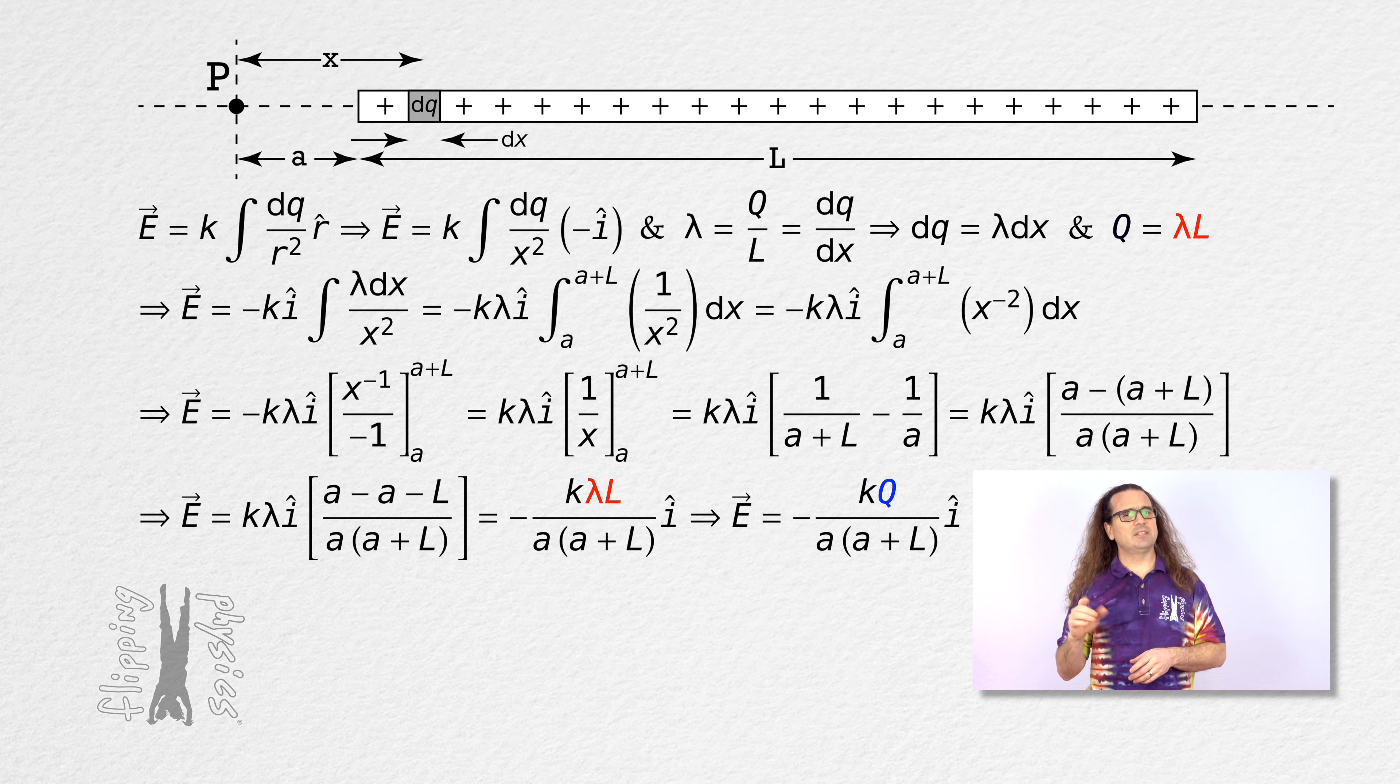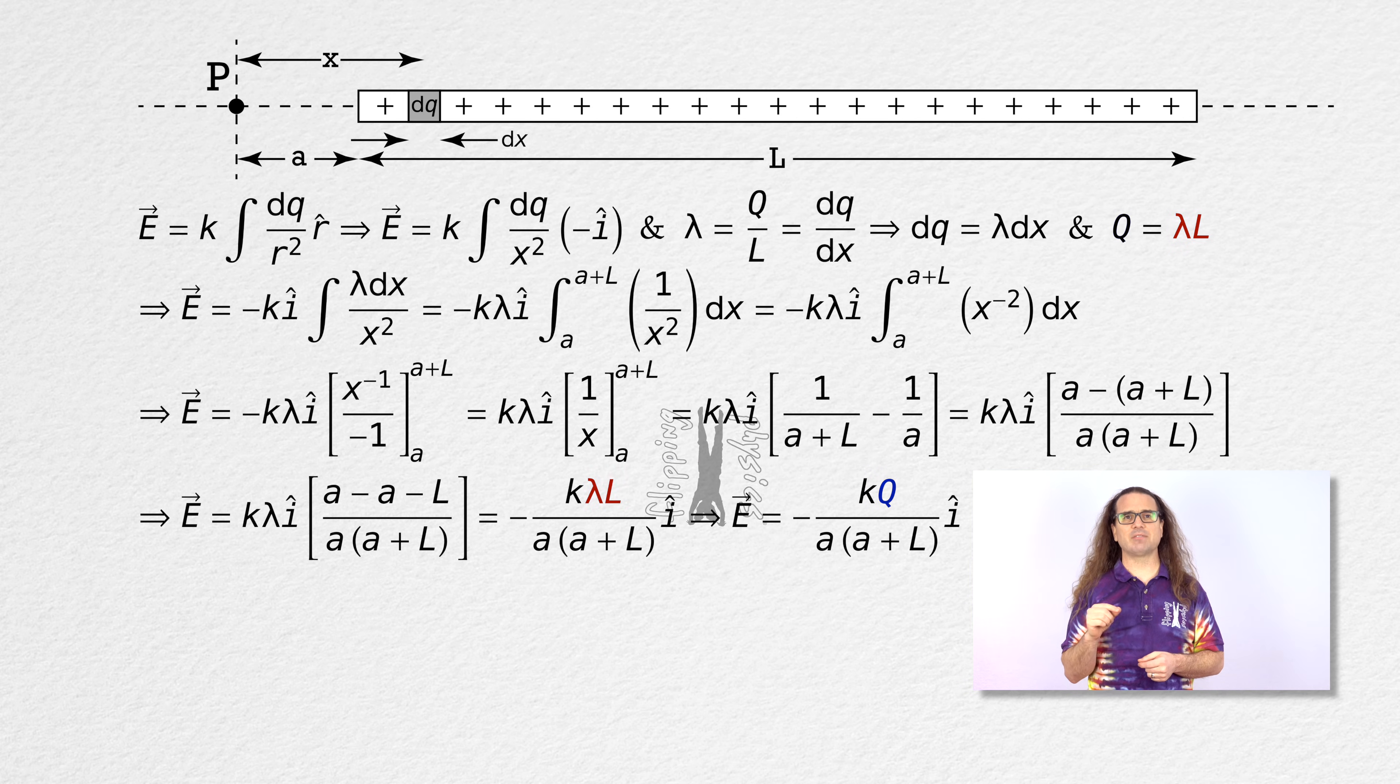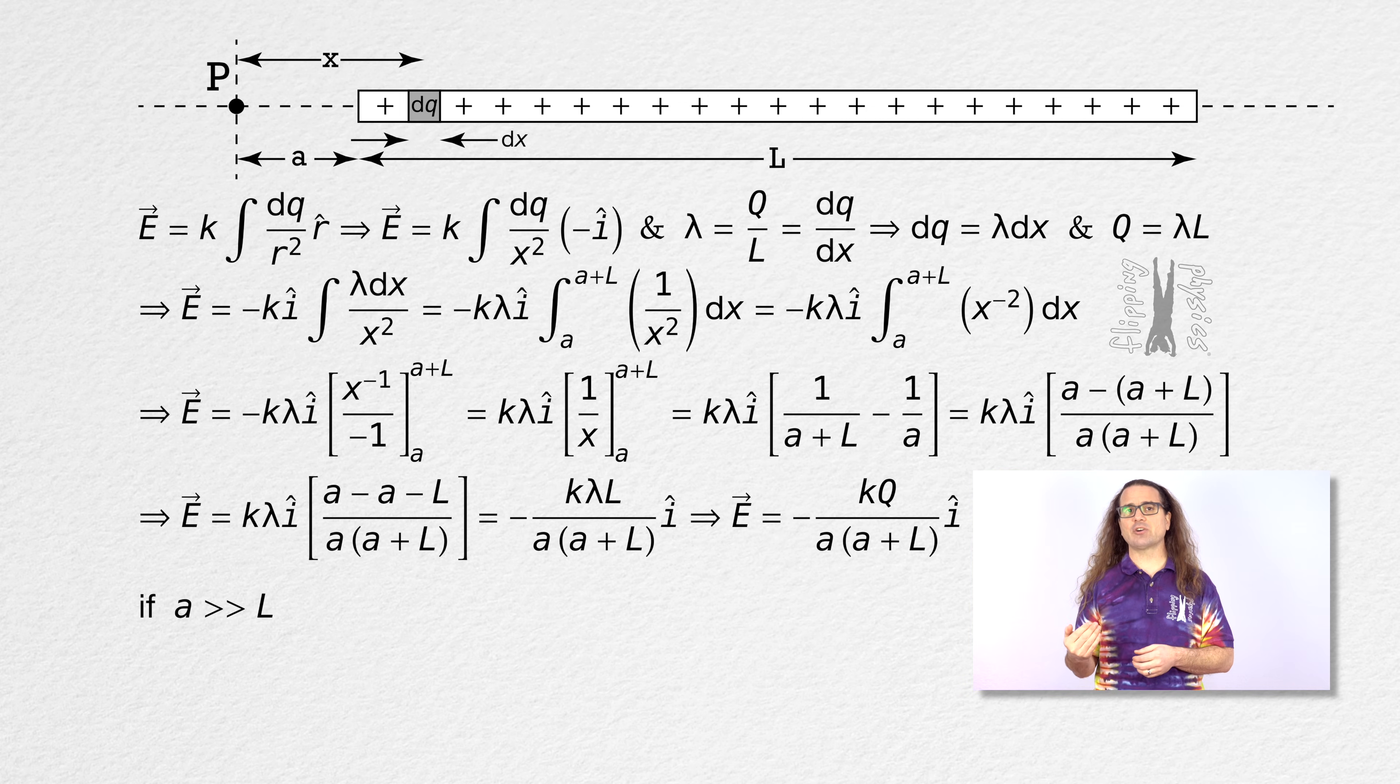Well done, Billy. I do want to make sure everyone recognizes what happens if the distance to point P from the left end of the rod, or A in this example, is much, much larger than the length of the rod, capital L.